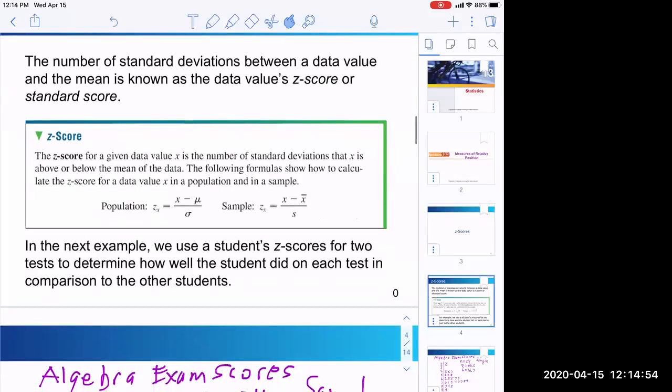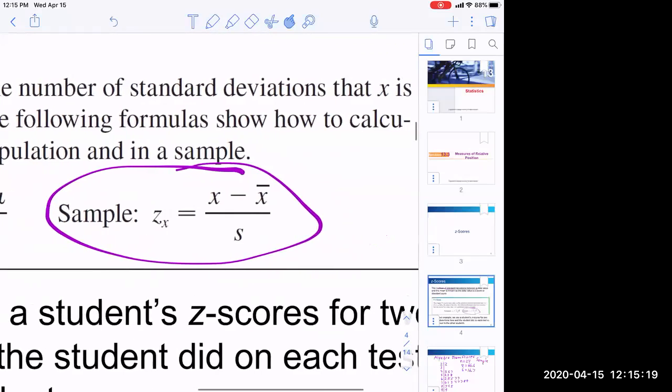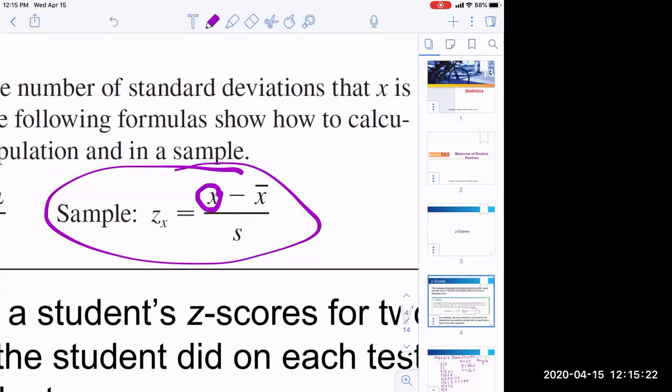So the formula for finding a z, which gives us, and this is important, the number of standard deviations that a data value falls from the mean. I'm going to focus on samples because I have a sample distribution here. So we take a data point, that's our x. So the x is from the data. And then the mean and standard deviation, those are calculated from the sample.